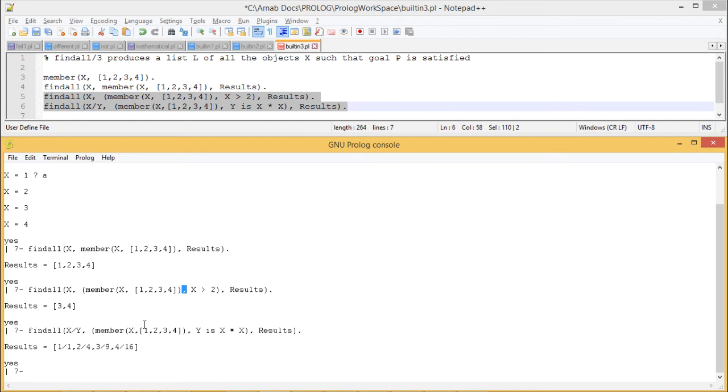Now let us go for this one. Here we have made this one Y is X star X, and X will be ranging from 1, 2, 3, 4. Now Y is X star X means we are going for the square of this 1, 2, 3, and 4, and my output will be like this.